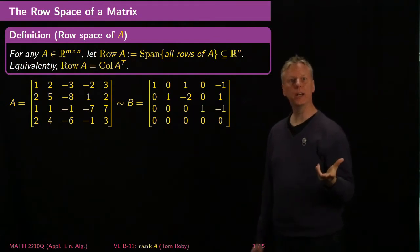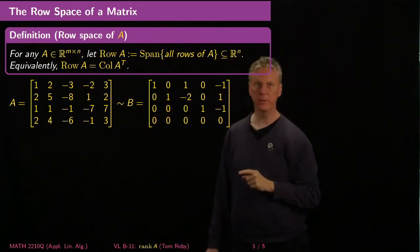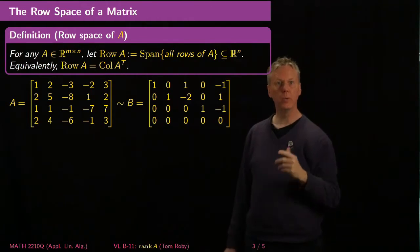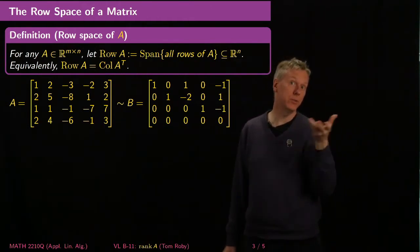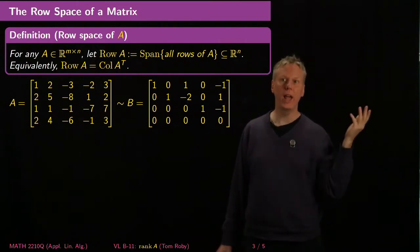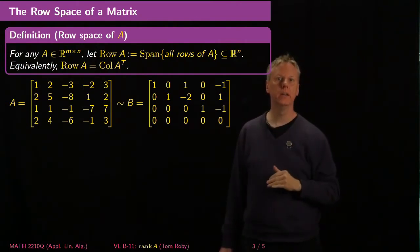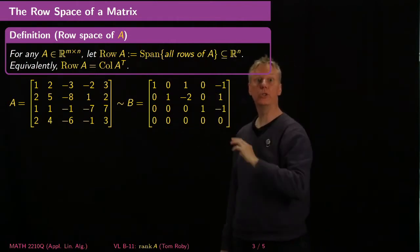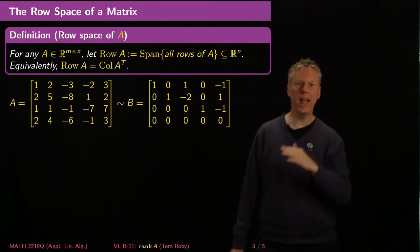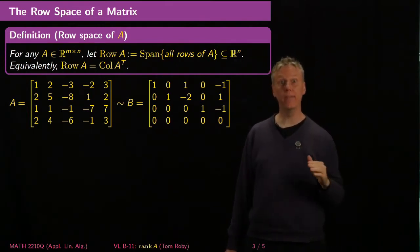What's the relationship between the row space of A and the row space of B? What I claim is that when you do a sequence of elementary row operations, you don't actually change the span of the rows, because every row that you create is a linear combination of the rows you already had. So you can't actually get anything that you didn't already have in the span.